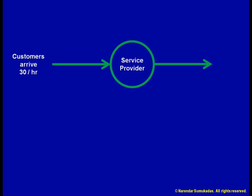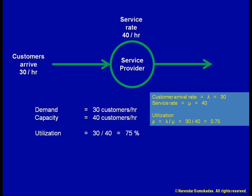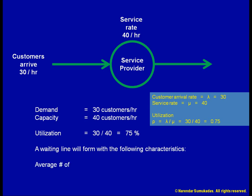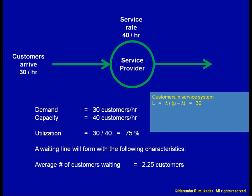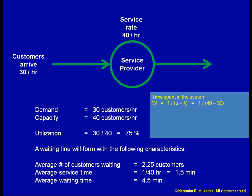Let us say we want to improve the waiting time further. We provide our employees with further training and also provide a runner behind the counter, which allows our employees to now serve 40 customers per hour. We can then recalculate our waiting line characteristics based on lambda equals 30 and mu equals 40. Our utilization is now down to 75%. On average, we can expect 3 customers in the restaurant, with 2.25 customers waiting in line. Each customer spends an average of 1.5 minutes at the counter plus 4.5 minutes in line, which comes to an average of 6 minutes in the restaurant.